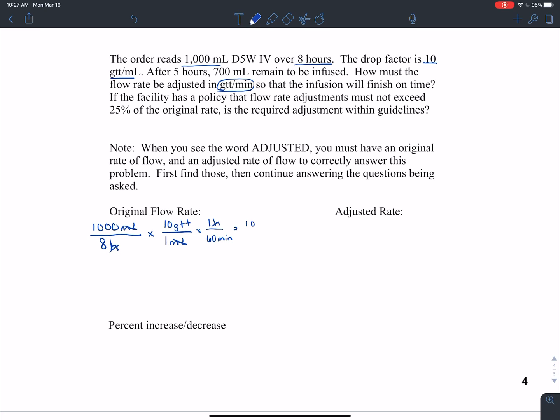So if I do this, when I multiply straight across, I have 10,000 over 480. When I divide, that gives me 20.83 repeating drops per minute. And when I round to the nearest whole number, because flow rates are always rounded to the nearest whole, I find that the original flow rate is 21 drops per minute.